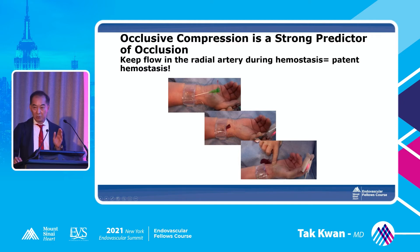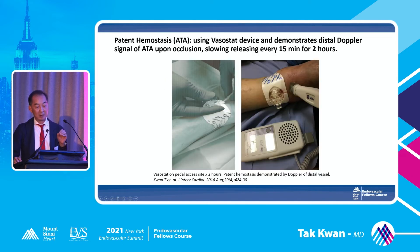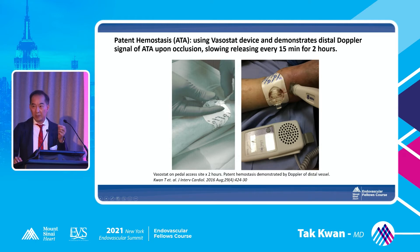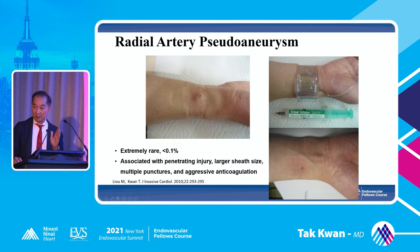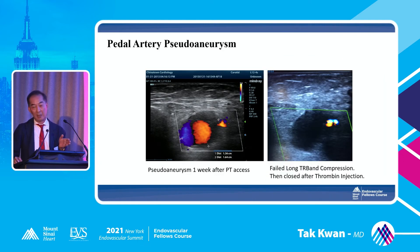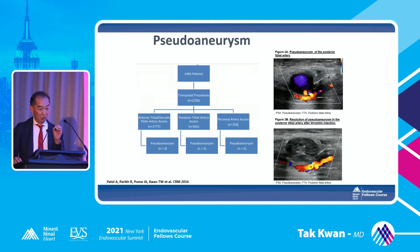The major issue is how to manage the occlusion. For radial, we do patent hemostasis — very simple. But for pedal, we use Doppler — we call it modified patent hemostasis. Make sure your Doppler flow is maintained when you occlude the pedal artery. For AT, it's simple — low pressure. But for PT and peroneal, you need to use high pressure. Pseudoaneurysm can develop. For radial, simple compression works. But for peroneal or pedal artery pseudoaneurysm, most of the time you need a thrombin injection — very low incidence, but when you detect a pseudoaneurysm, thrombin injection is key.